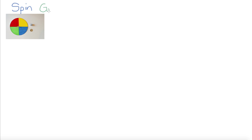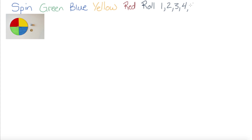For our second and final example, let's list the possible outcomes of spinning a spinner with four equal sections, rolling a six-sided die, and tossing a coin. If we list the outcomes of each individual item: we could spin green, blue, yellow, or red. We could roll one, two, three, four, five, or six. And we could toss heads or tails.